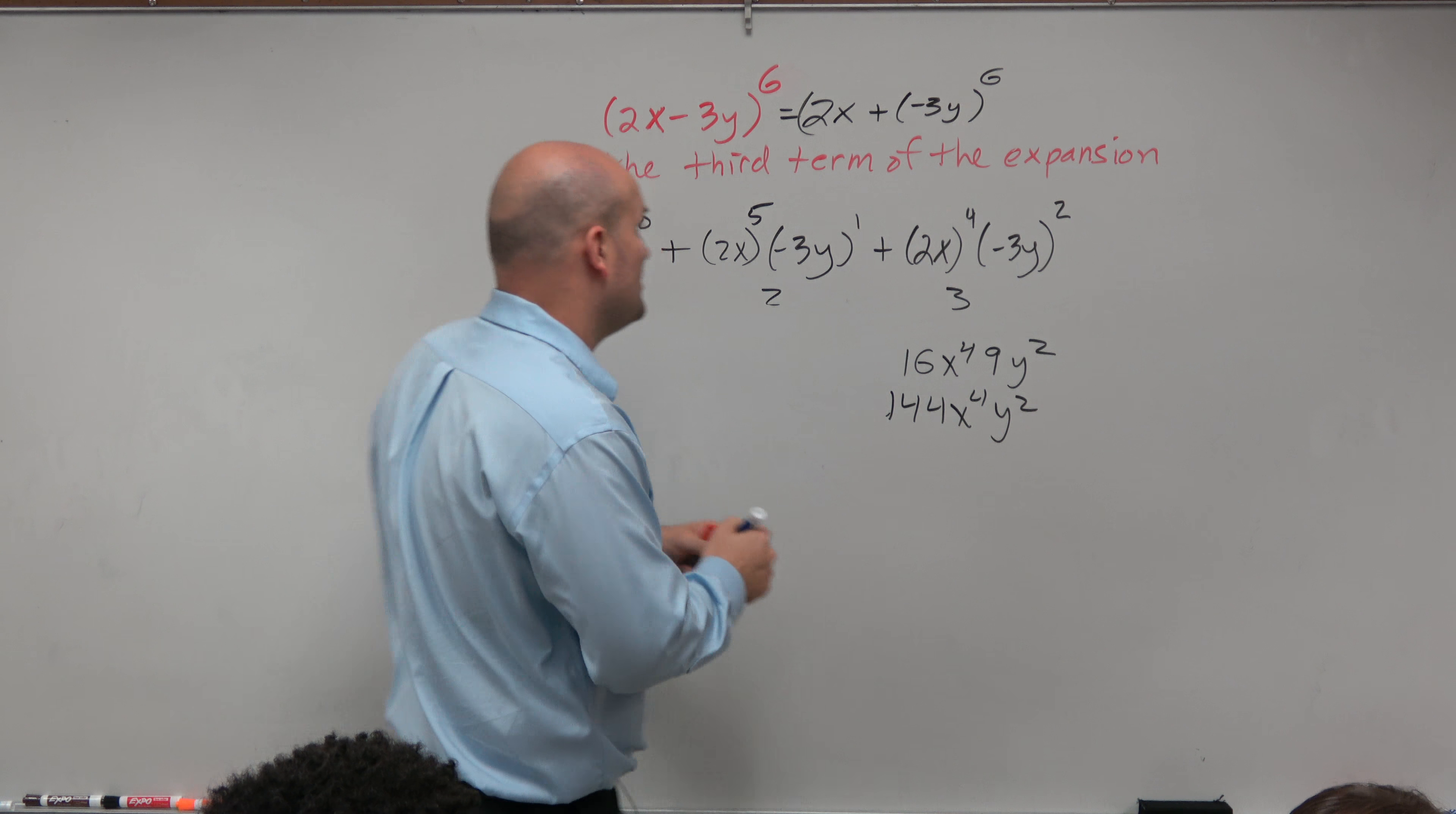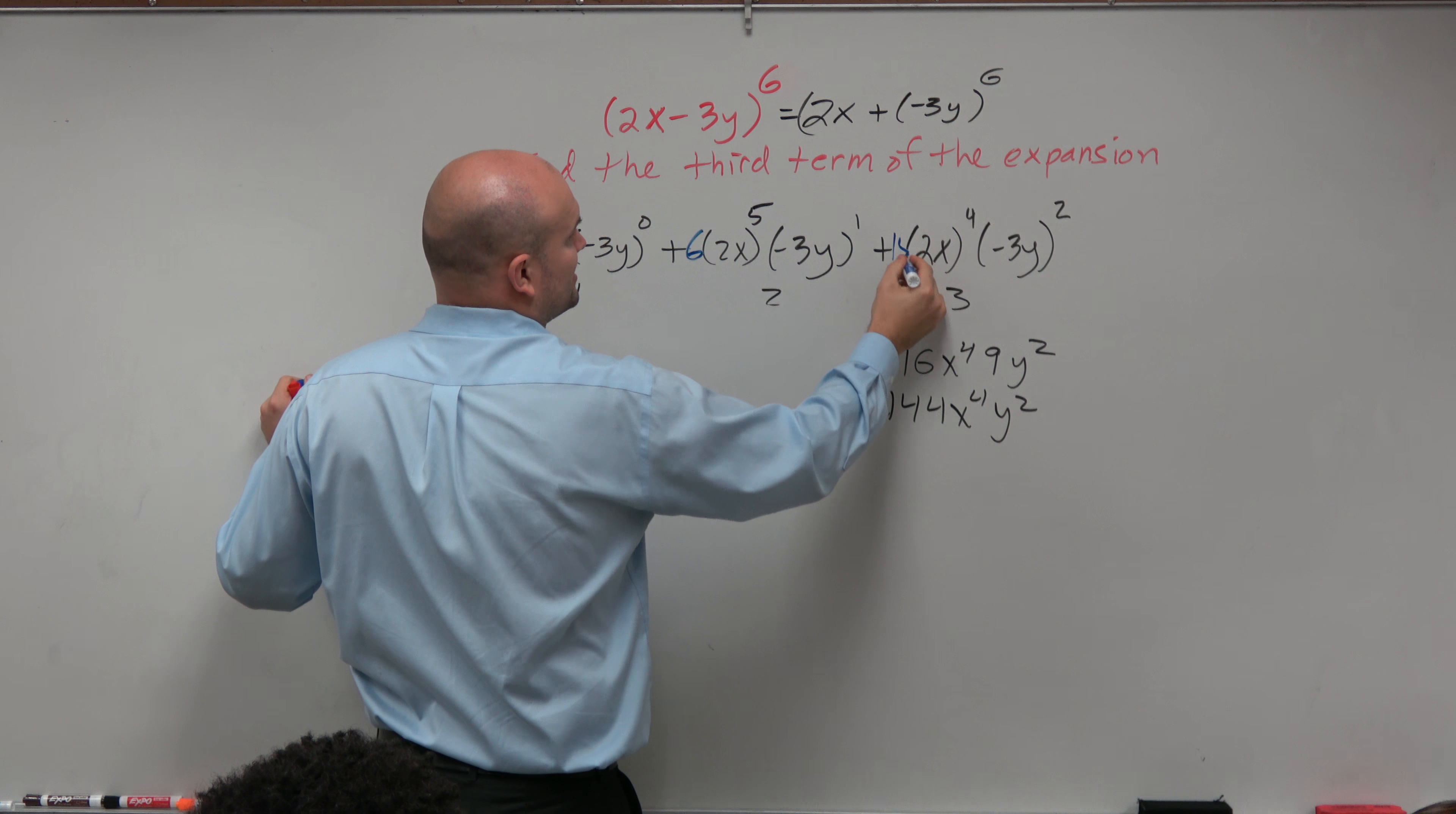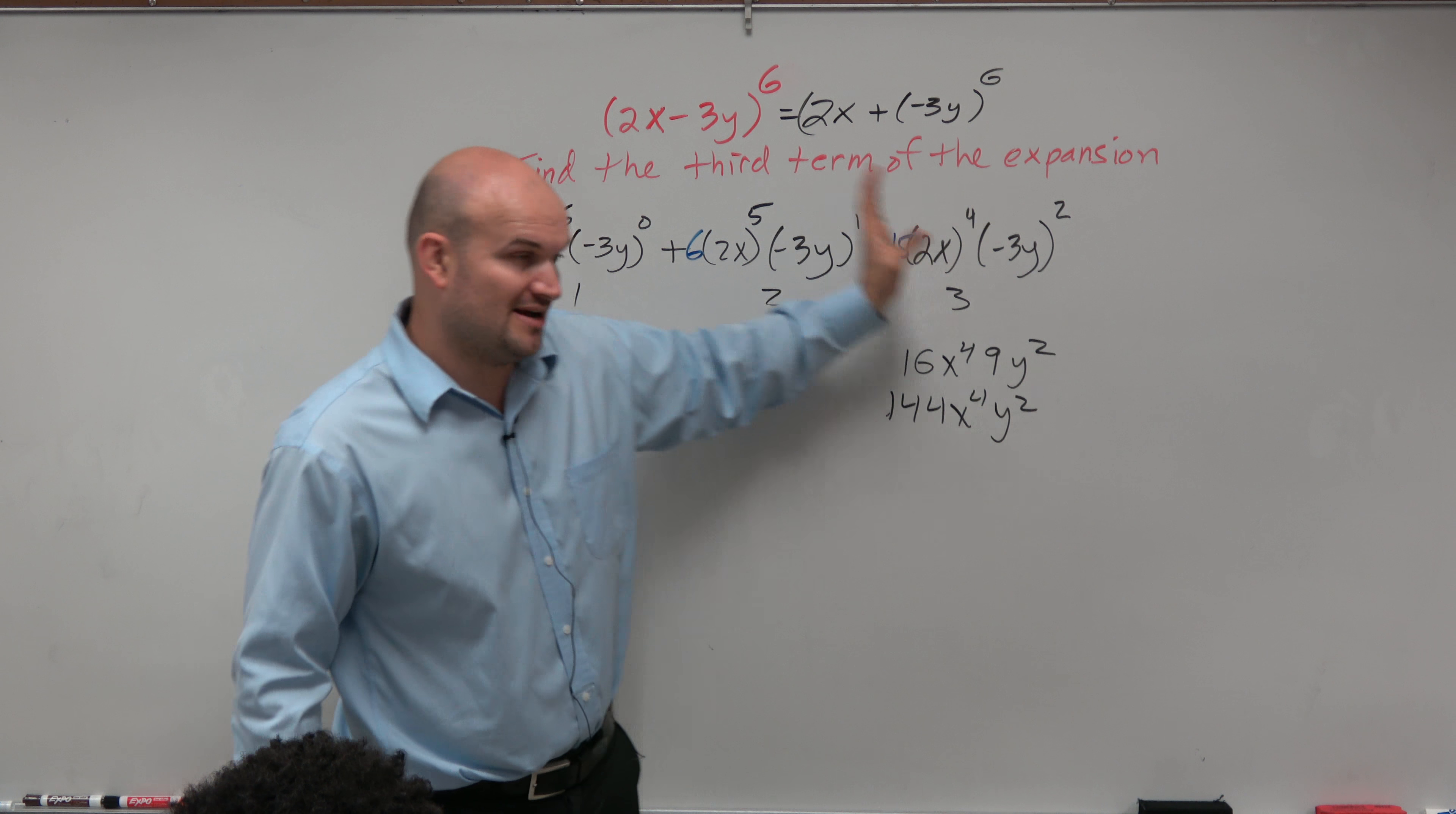So therefore, going into Pascal's Triangle, we also know that there's coefficients of 1. The next one is 6, and then the next one is 15. Thank you very much. I cannot forget the Pascal's Triangle. We know this is the first thing that I do, and I just started talking and forgot to go over this.